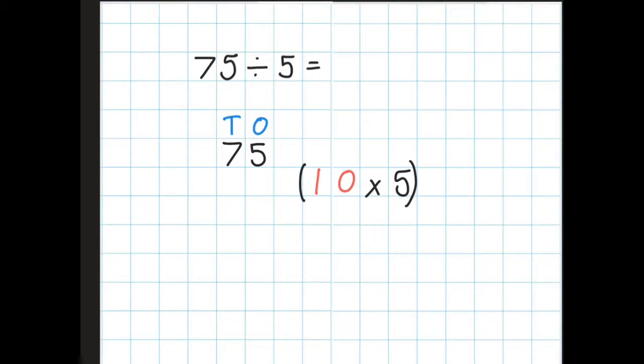I know that 10 times 5 is 50, so I'm going to take 50 away from 75. 75 minus 50 is 25. So I've got 25 left. I need to take chunks of 5 off 25.